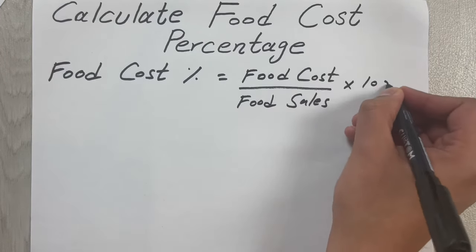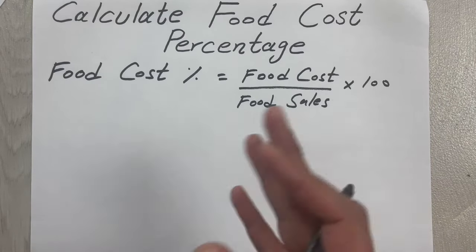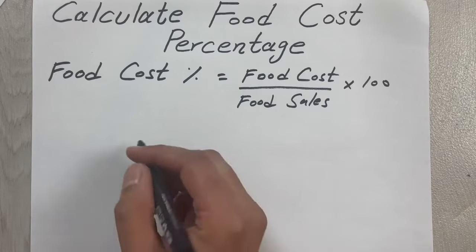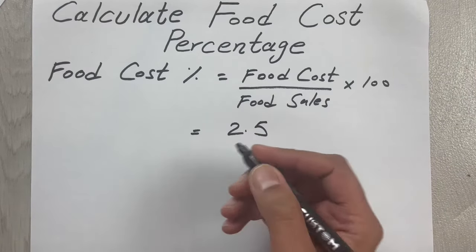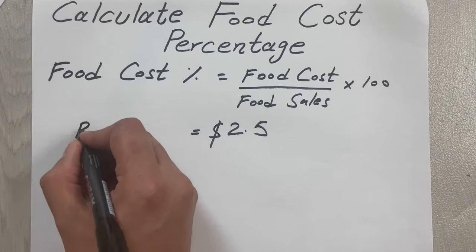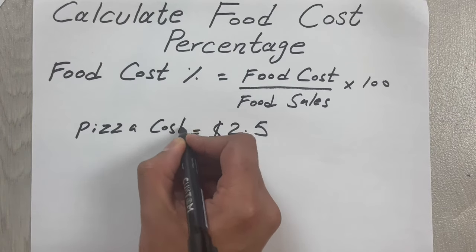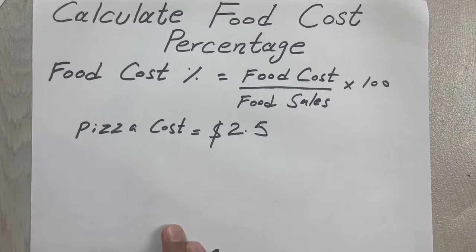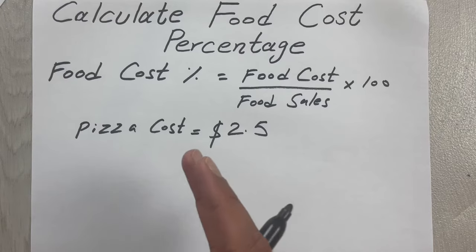Let's say we have a pizza and the cost of the pizza is $2.50. The pizza cost is $2.50 and it includes all the entire cost of producing the pizza including labor, ingredients, everything.